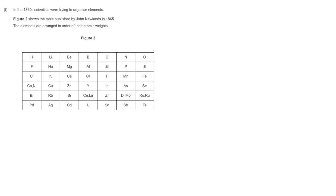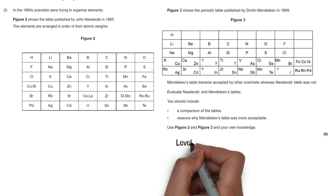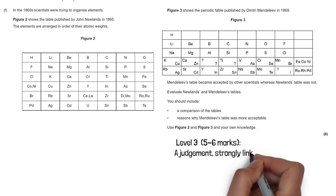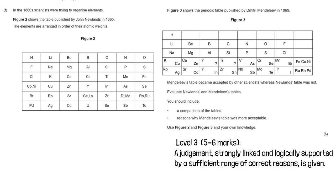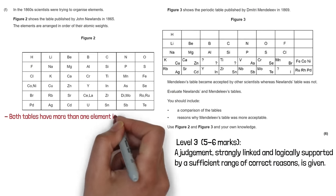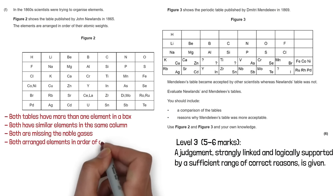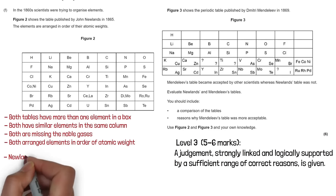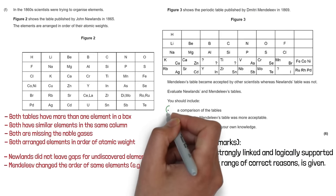The last question is a 6-marker asking us to evaluate Newlands' and Mendeleev's tables, including a comparison and reasons why Mendeleev's table was more acceptable. For the comparison: both tables have more than one element in a box, both have similar elements in the same column, both are missing the noble gases, and both arrange elements in order of atomic weight. For differences: Newlands did not leave gaps for undiscovered elements, whereas Mendeleev changed the order of some elements, for example tellurium and iodine.